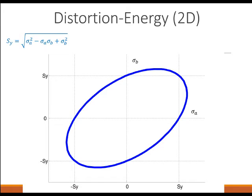The distortion energy, for a 2D case, traces an ellipse that is the boundary of failure and not failure. If I have a stress condition in which my principal stresses cause the part to reside in the outside region, then we'll say that it's going to fail, and if it's in the internal region, then we're going to say it's not going to fail. Our yield strength is related to the two principal stresses that are non-zero — I call them A and B.